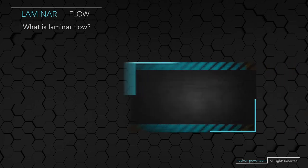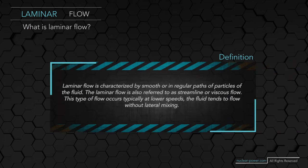Let's start with the definition. Laminar flow is a type of fluid flow characterized by smooth or regular paths of particles of the fluid. Laminar flow is also referred to as streamlined or viscous flow. This type of flow occurs typically at lower speeds and the fluid tends to flow without lateral mixing.